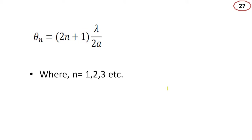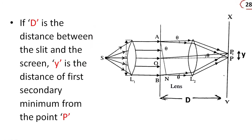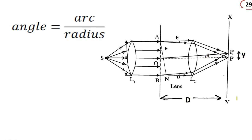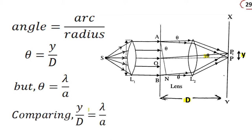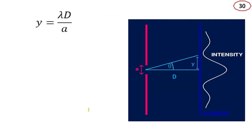Where n equals 1, 2, 3, etc. Now, let P1P equal to y, the angle is theta, and d is the separation between the slit and screen. If d is the distance between slit and screen and y is the distance of the first secondary minimum from point P, then using angle equals arc by radius, theta equals y by d. From the equation theta equals lambda by a, comparing both gives y by d equals lambda by a, or y equals lambda d by a.